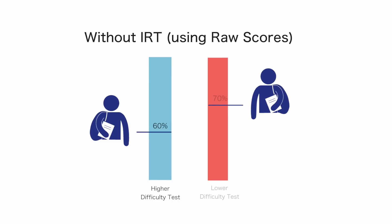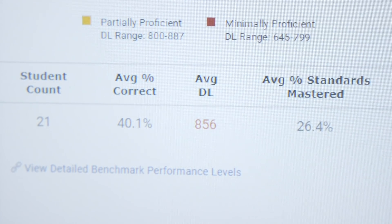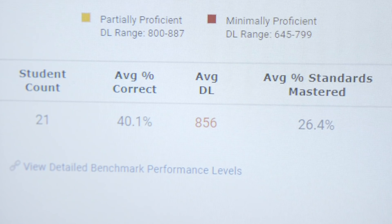What if the student scored 70% correct on the next test? Did their ability increase, or was the second test just easier? You can see how it would be easy to misinterpret raw scores, especially when trying to measure student growth across different tests. In contrast to other systems, Galileo provides an IRT-based developmental level scale score, just like the state test.